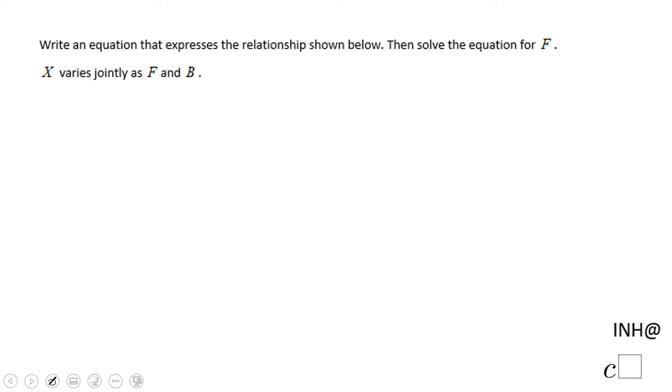Welcome or welcome back to I Need Help at C Squared. In this example we have to write an equation that expresses the relationship below. X varies jointly as F and B - this is what we call joint variation.